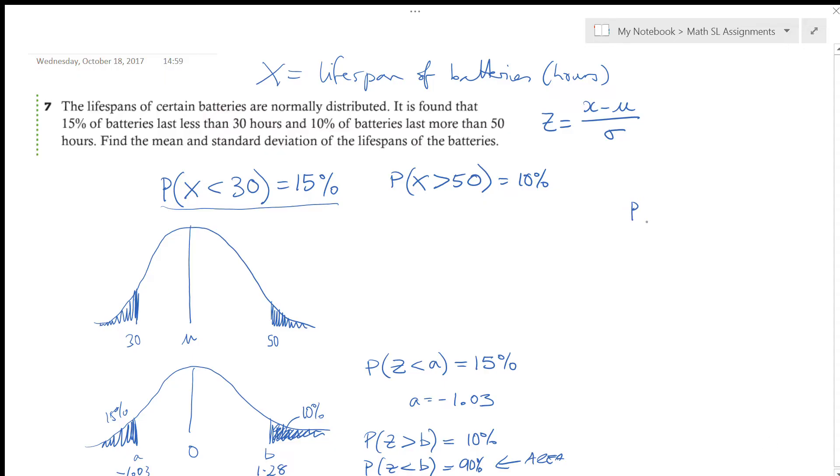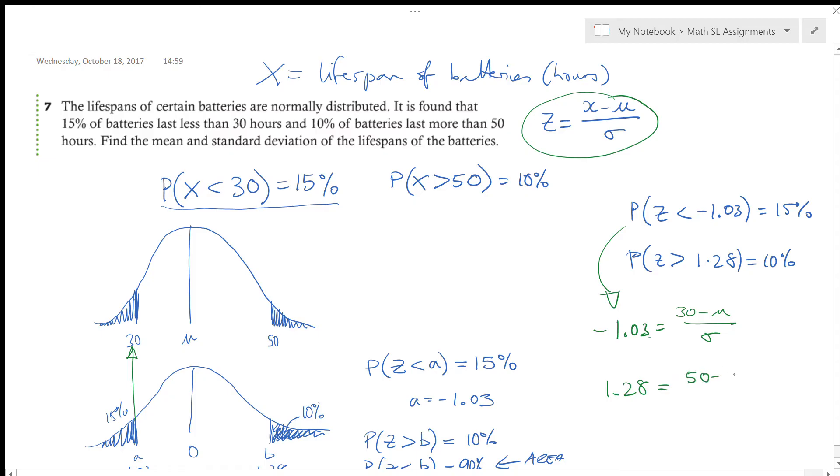Alright, so here's two things that I know. I know that the probability that Z is less than negative 1.03 is equal to 15%. Probability that Z is greater than 1.28 is equal to 10%. So now let's convert these. I'm going to use these Z scores to help me determine the mean and the standard deviation. So using this one here, I can create this equation, negative 1.03, right? It's equal to X minus the mean divided by the standard deviation. Well, this negative 1.03, it correlates to this 30. So 30 minus the mean divided by the standard deviation. That's one of my equations. And the other one is 1.28 is equal to 50 minus the mean divided by the standard deviation.